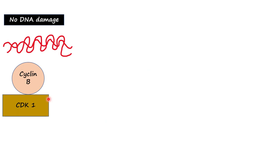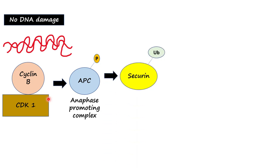CDK-cyclin B complex also activates anaphase promoting complex or APC. APC adds an ubiquitin tag to securin. When securin is ubiquitin tagged, it is sent to the proteasome for degradation.